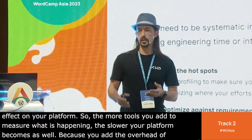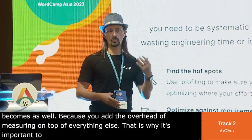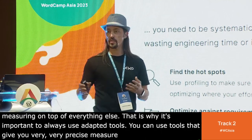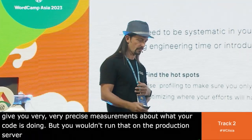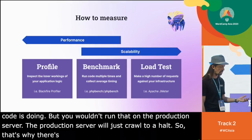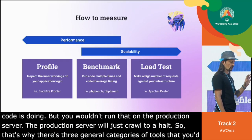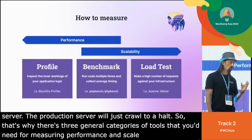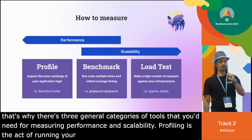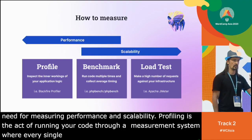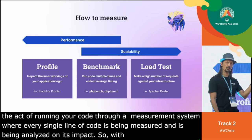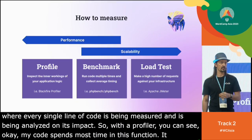There are three general categories of tools needed for measuring performance and scalability. Profiling is the act of running your code through a measurement system where every single line of code is being measured and analyzed on its impact. With a profiler you can see your code spends most time in this function, it uses that much memory, it has so many calls of this function, and so on.